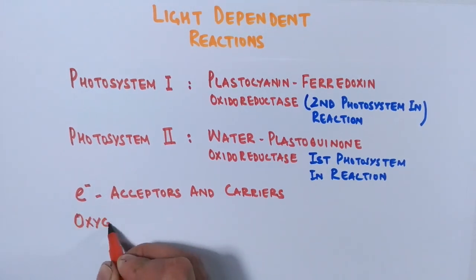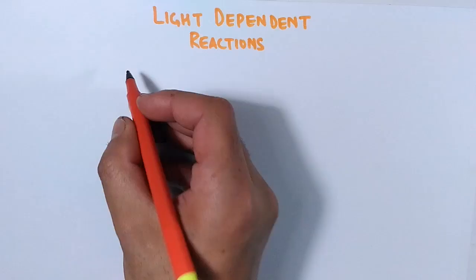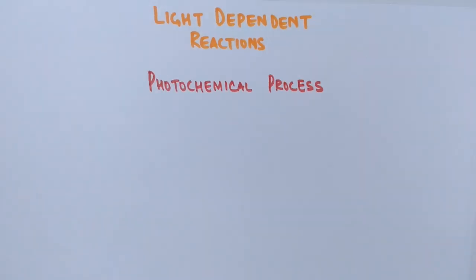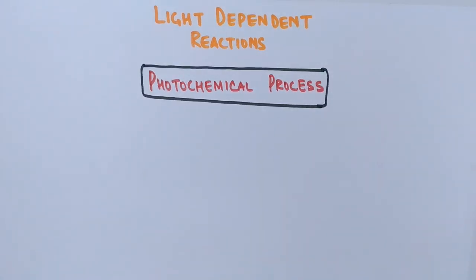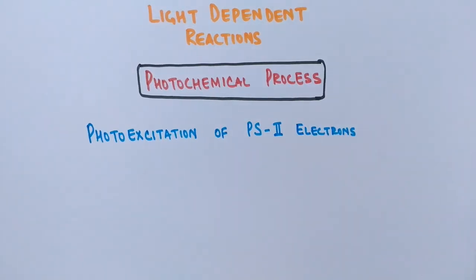There is also an oxygen-evolving complex attached to Photosystem II, which produces oxygen from the photolysis of water. The light-dependent phase is a photochemical process, involving photons and producing chemical energy in the form of ATP. Initially, there is photoexcitation of PS II electrons, which supplies resonance energy to the electrons and ejects them from the reaction center.